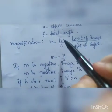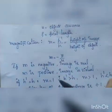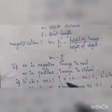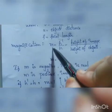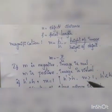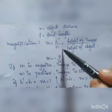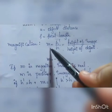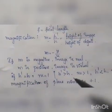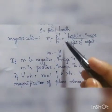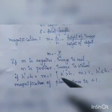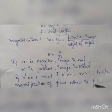If m is positive, the image formed is virtual and erect. If h' = h, magnification is 1. If h' > h, magnification is greater than 1. If h' < h, magnification is less than 1. These concepts are for the spherical mirror. For a plane mirror, the magnification will always be positive 1.